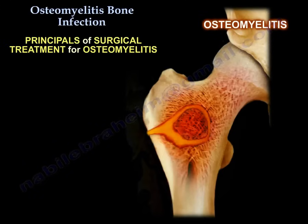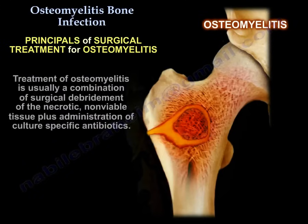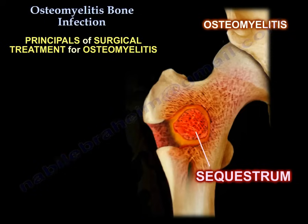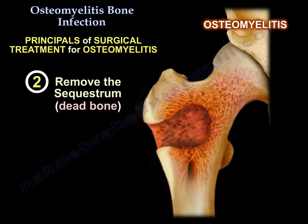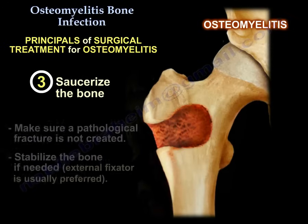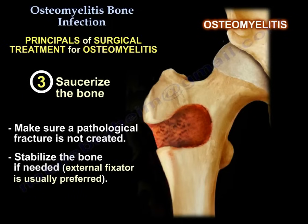Treatment of osteomyelitis is usually a combination of surgical debridement of necrotic non-viable tissue plus administration of culture-specific antibiotics. Surgical steps include: opening the involucrum (the new bone), removing the sequestrum (the dead bone), saucerizing the bone while ensuring a pathological fracture is not created, and stabilizing the bone if needed — an external fixator is usually preferred.